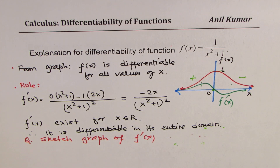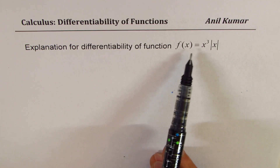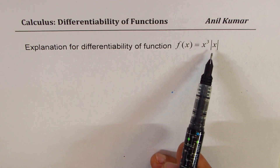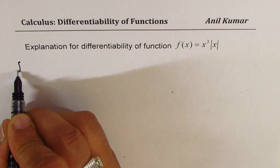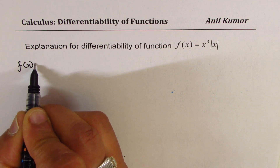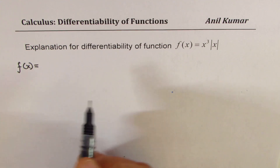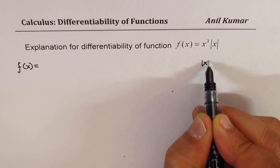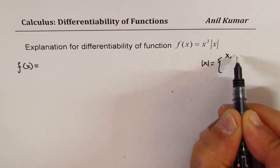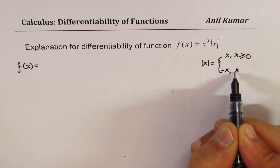Let's take the next example. We need to explain differentiability of f of x equals x cubed times absolute value of x. Absolute value of x equals x when x is greater than or equal to 0, and minus x when x is less than 0.